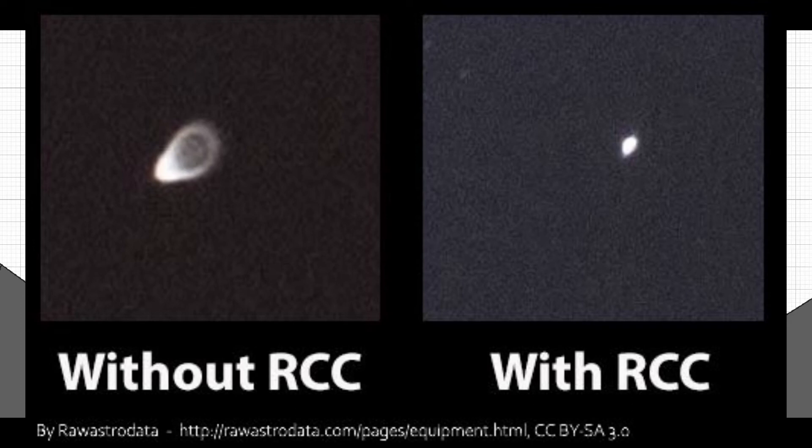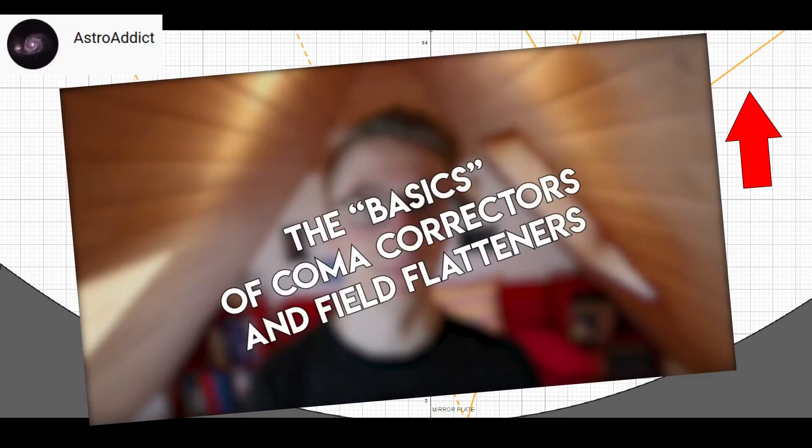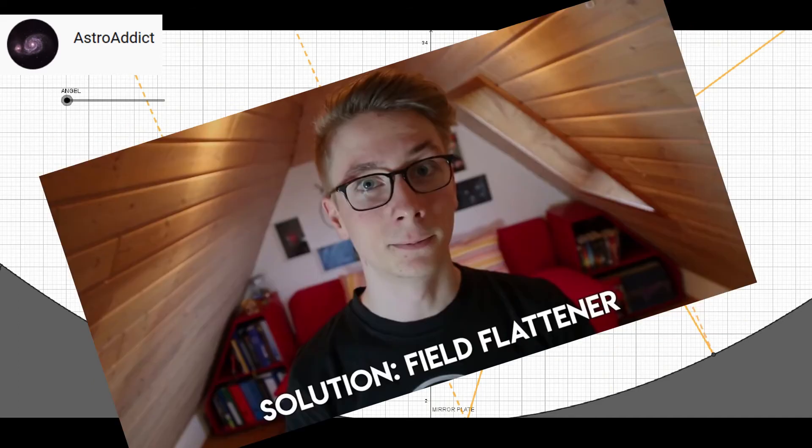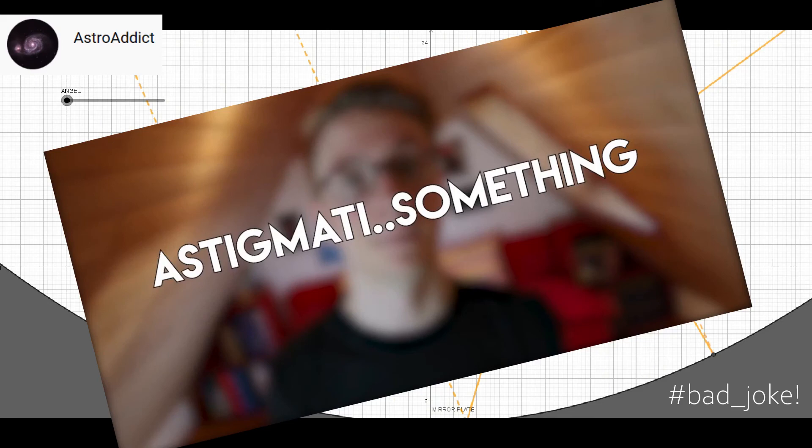If you want to know more about lens scope errors, try this link above or in the description below. Tim from AstroAddict did a great job on explaining the main distortions of refractors. He's more the lens guy and I'm the mirror whatever. Just watch it.